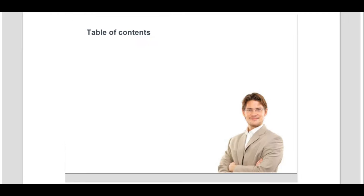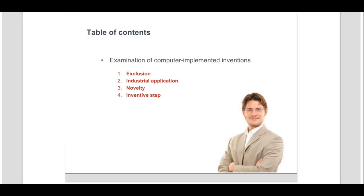In the first module, we introduced the background to the patentability requirements for a computer-implemented invention. In this module, we will go deeper and discuss how a computer-implemented invention is examined with respect to the requirements of Article 52 EPC, namely exclusion, industrial application, novelty, and inventive step.